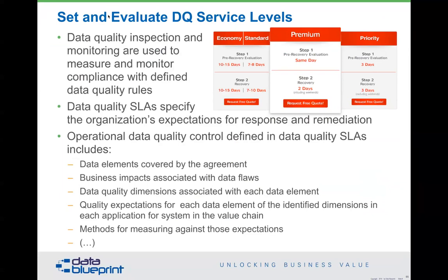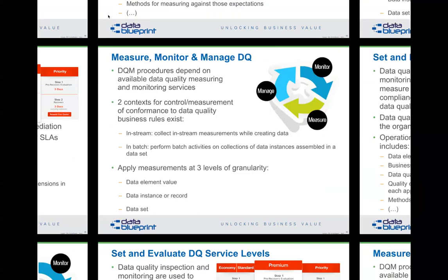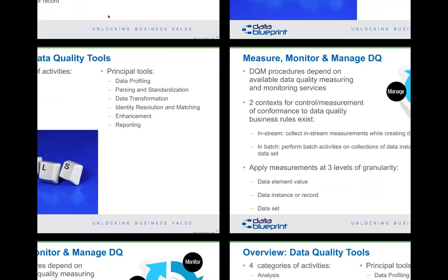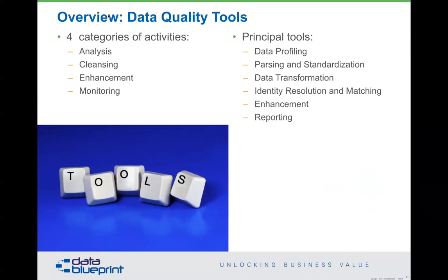Measuring and managing these processes requires at least three levels of granularity: in-stream sampling, batch totals, and individual element-level measurement. All are valid approaches depending on how the problem is defined. Measurements apply at the data set level, the record level, or the data element value level — that is, an attribute within a particular instance or record.